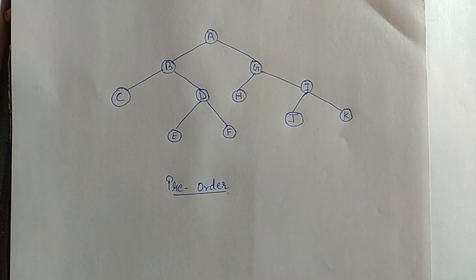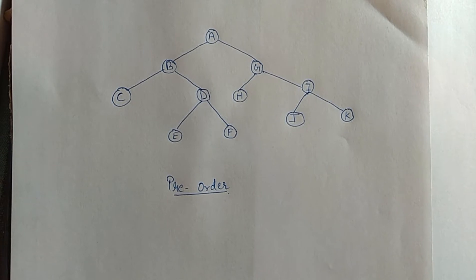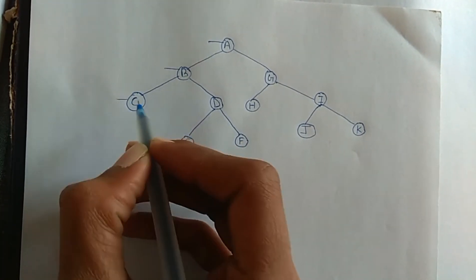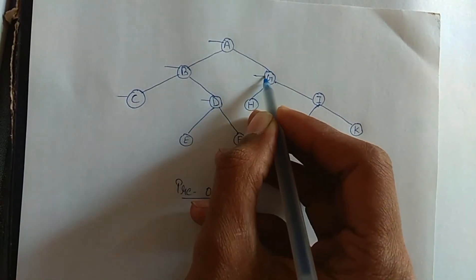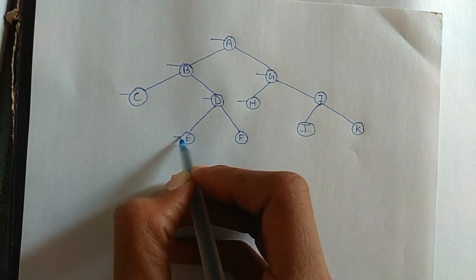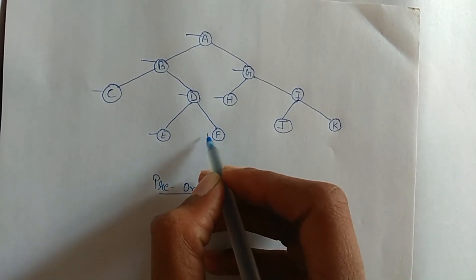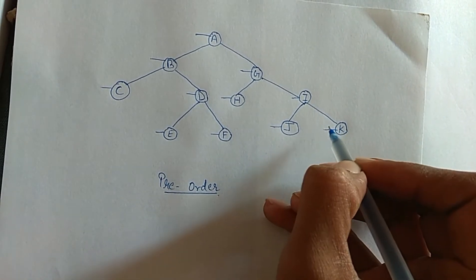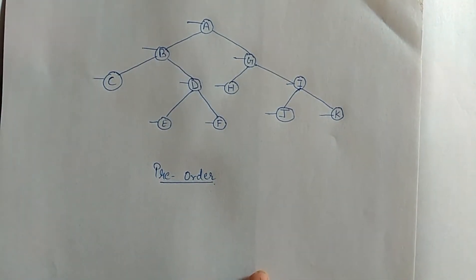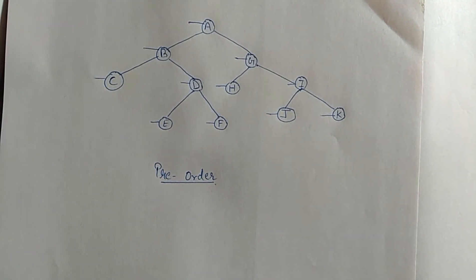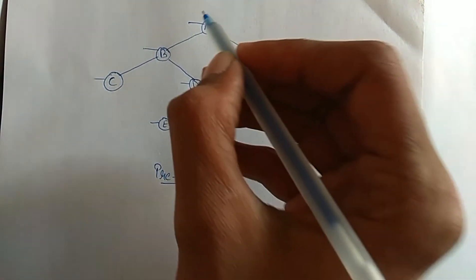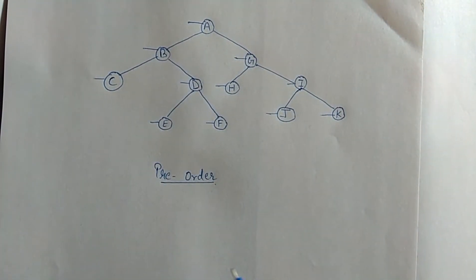...write the left line on each node of the tree, like this. Draw the left line on each node. After drawing the left line on each node, just traverse each node and write the pre-order.